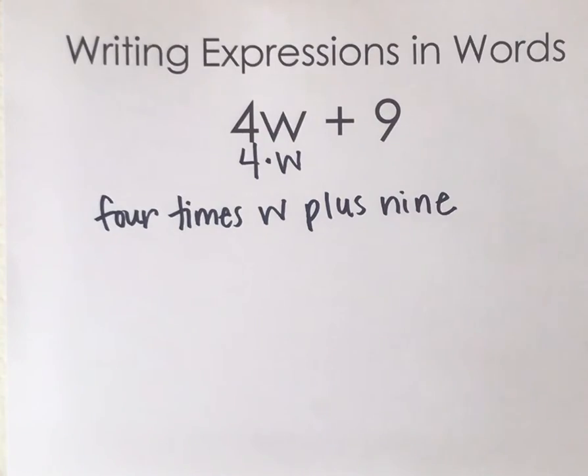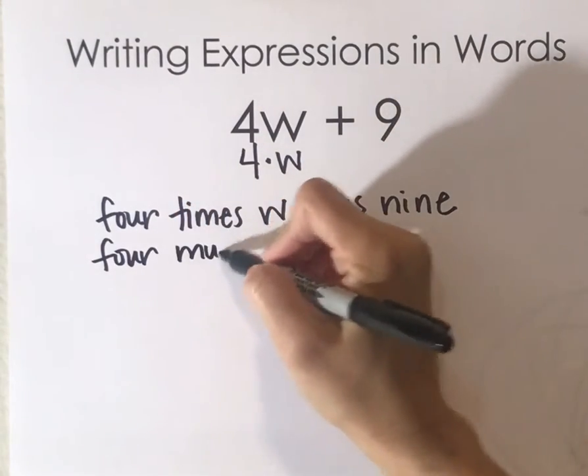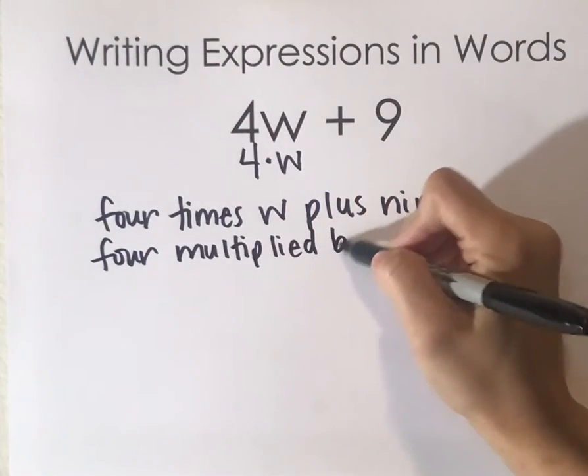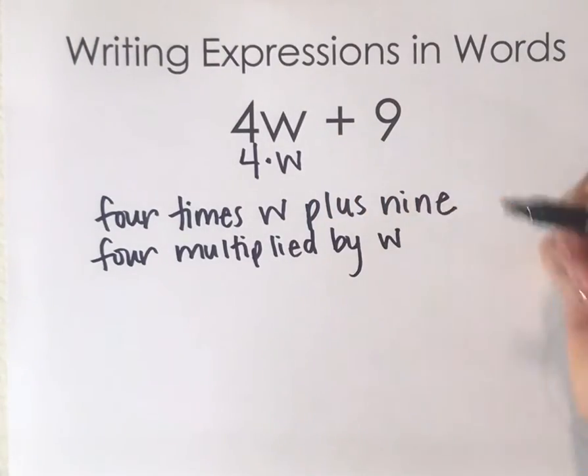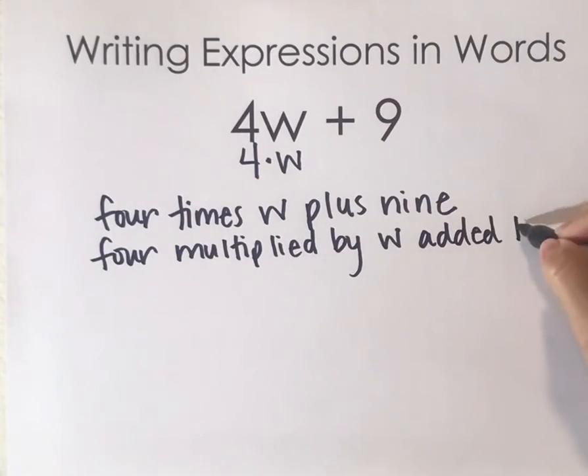There are other ways you could say it. You could also say four multiplied by W. And then instead of saying plus, you could say added to nine.